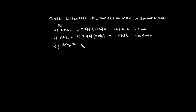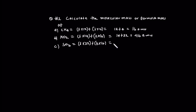For sulfur trioxide: 1 times 32 (sulfur), plus oxygen 3 times 16. So the total is 80 atomic mass units.